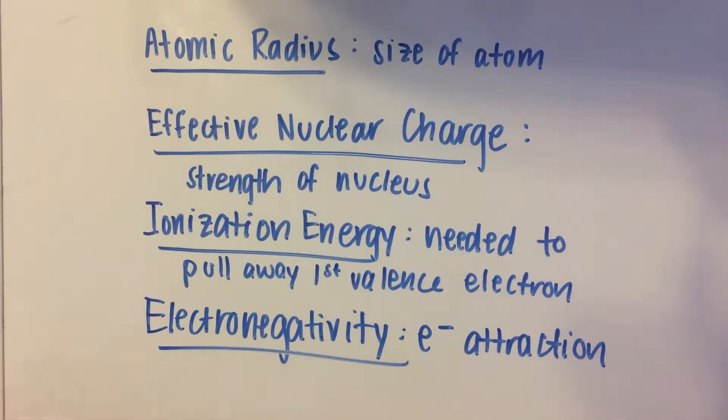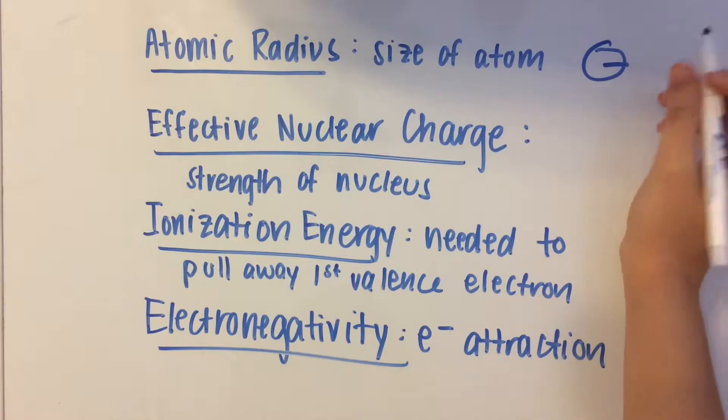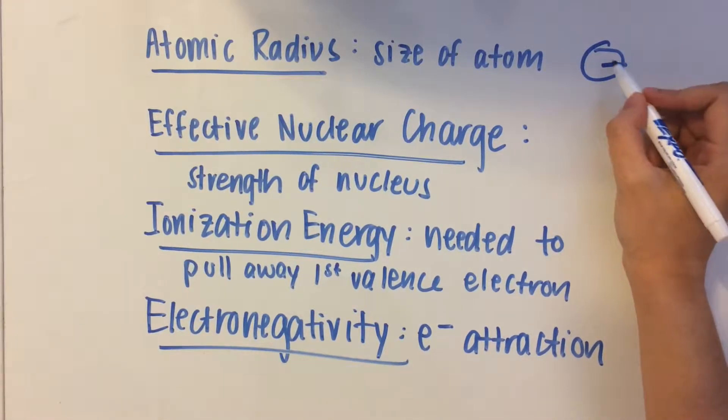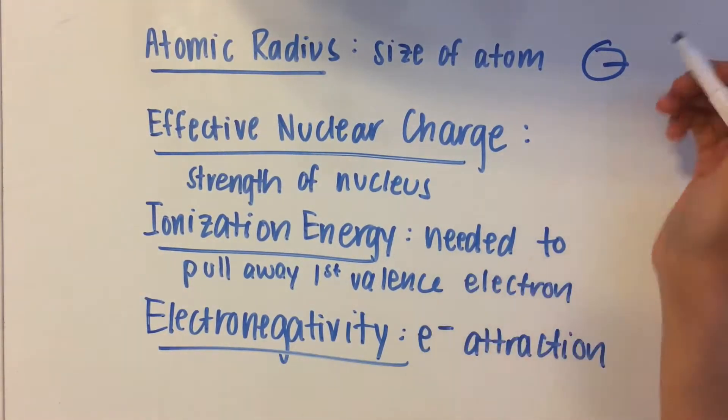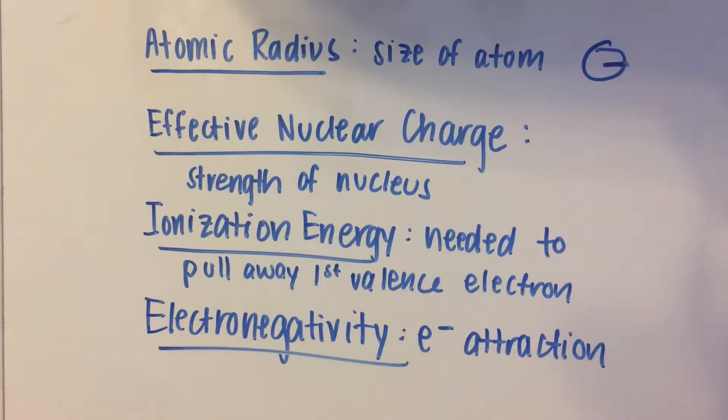So first let me explain what these mean to you. Atomic radius really talks about the size of the atom. So let's say like you have this circle, and of course the radius is half of its diameter. So that's really what we're talking about when we say atomic radius. We're looking at the radius of the atom, and the bigger the radius, the bigger the atom.